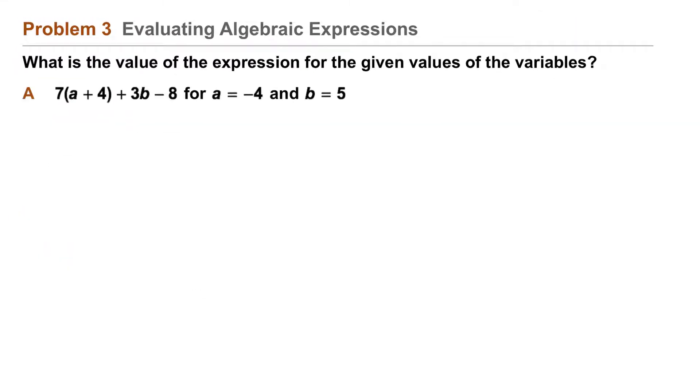Part A: 7(a + 4) + 3b - 8 for a = -4 and b = 5. Substituting -4 for a and 5 for b, we rewrite the expression as 7(-4 + 4) + 3(5) - 8.